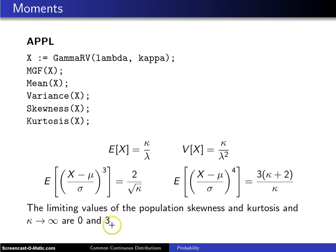And finally, the kurtosis goes to 3 in the limit as kappa goes to infinity. And that is also interesting because that particular kurtosis is associated with a normal random variable.